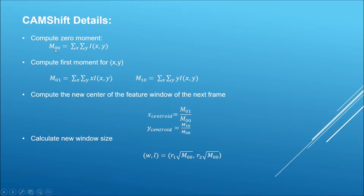Here are the details of the CamShift calculations. First, M00 is the calculation of the intensity at the (x, y) coordinate — that's the zeroth moment. Then we compute the first moment: M10 is the x-coordinate multiplied by the intensity at position (x, y), and M01 is the y-coordinate multiplied by the intensity at that same location. Then we calculate the centroid for the new feature window of the next frame.